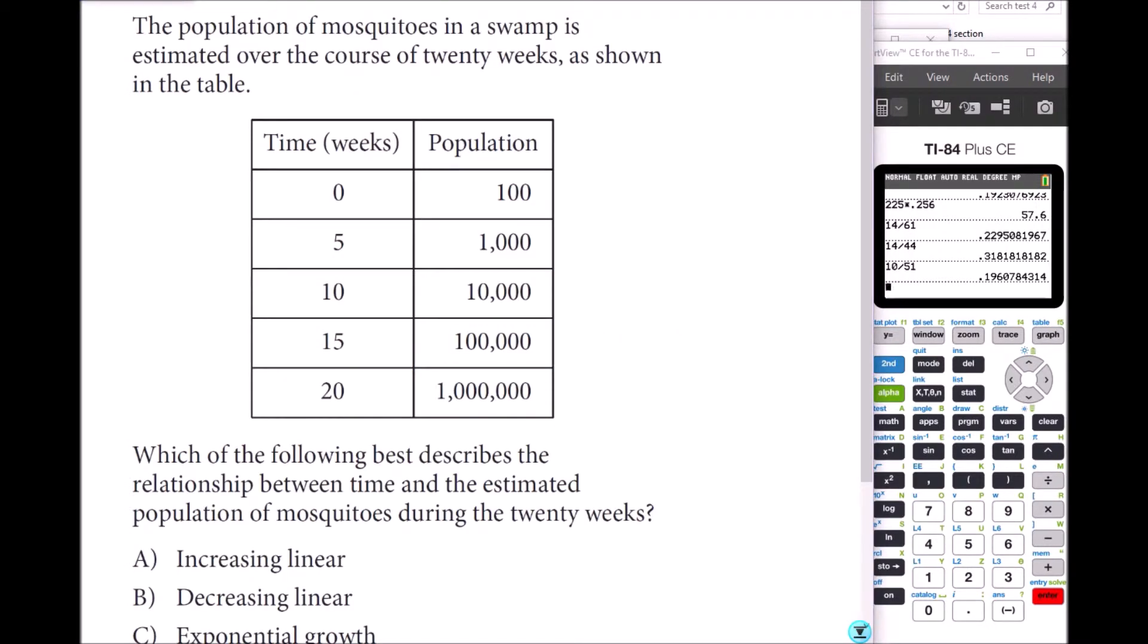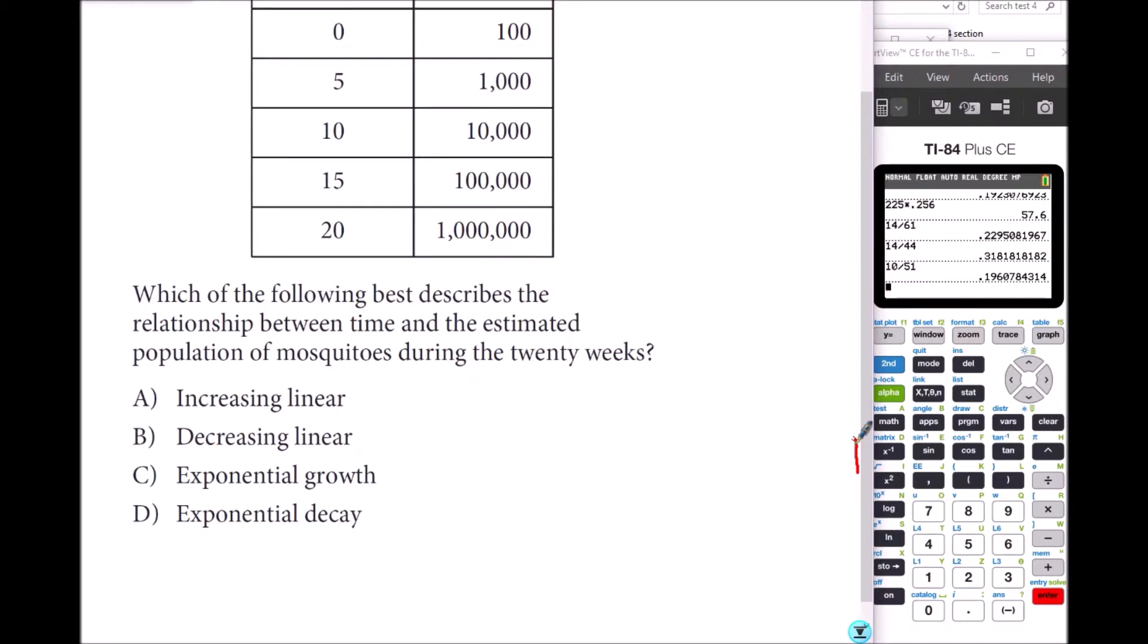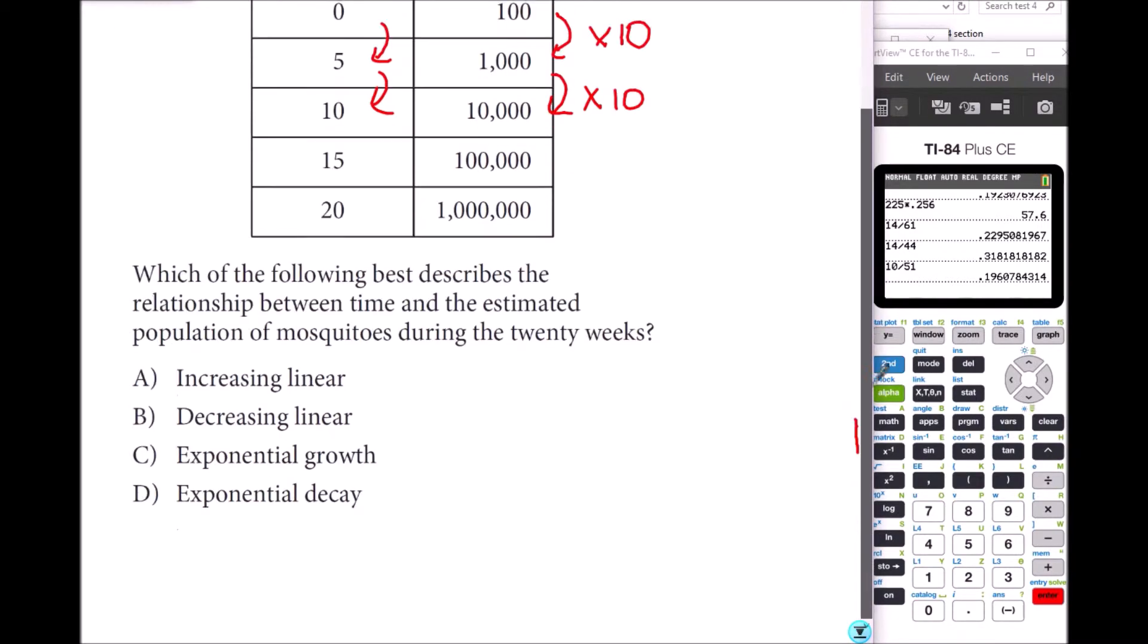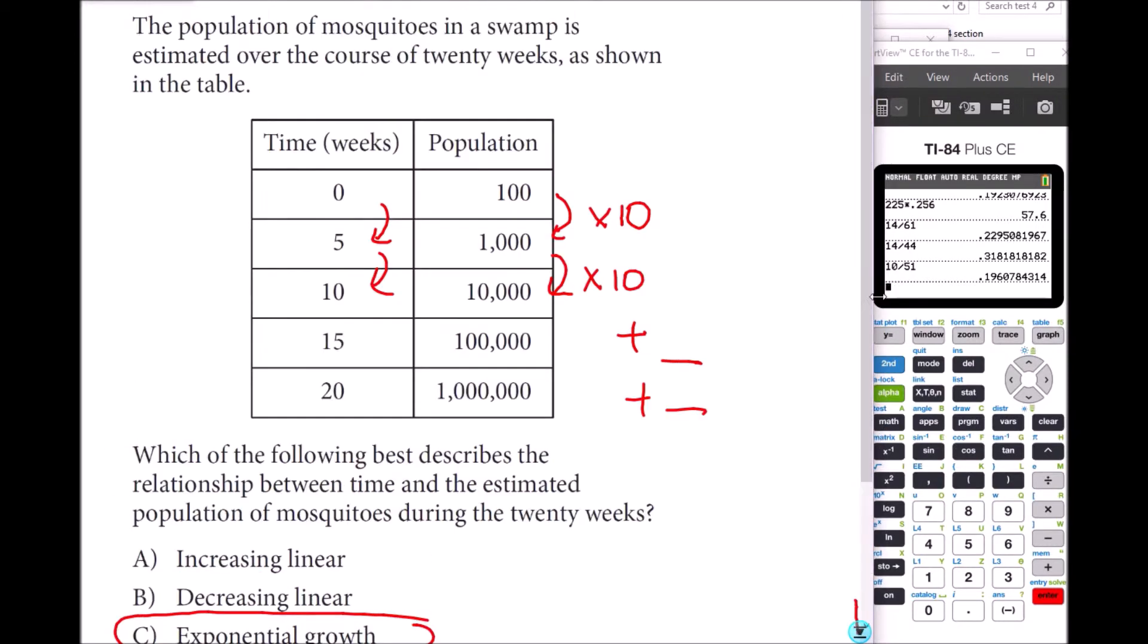Number 13: The population of mosquitoes in a swamp is estimated over the course of 20 weeks as shown in the table. Which of the following best describes the relationship between time and estimated population during the 20 weeks? Every 5 weeks, the population gets multiplied by 10. When you multiply by a constant number, it means it's exponentially growing. If you're adding the same number, then it is increasing linearly.